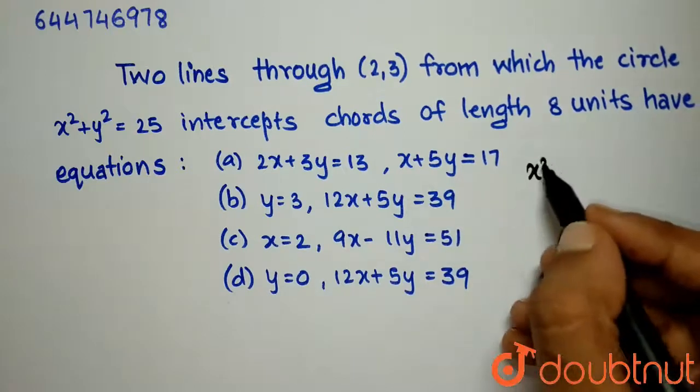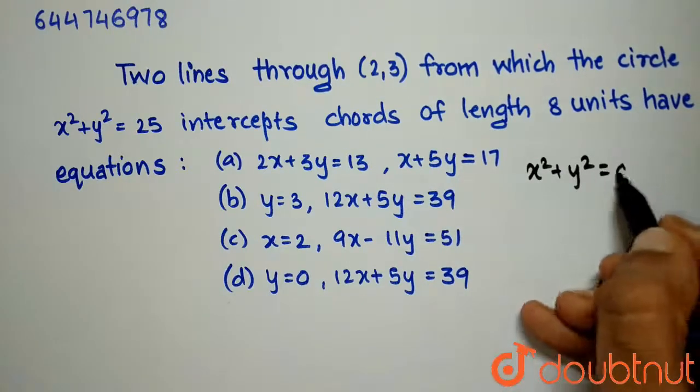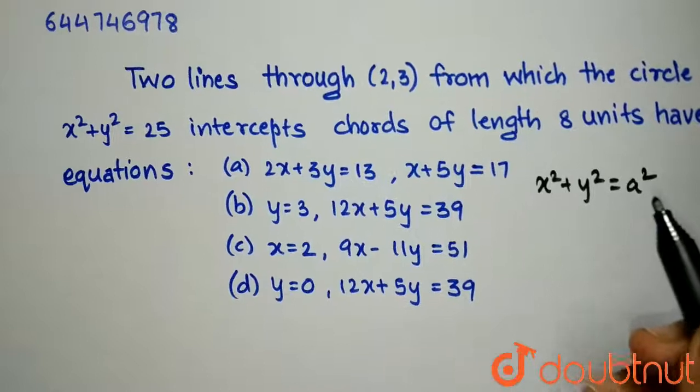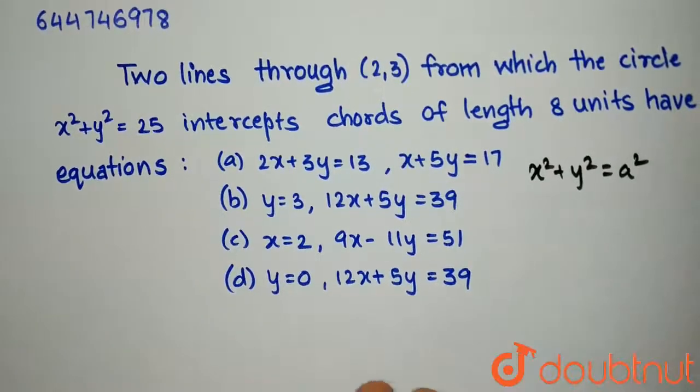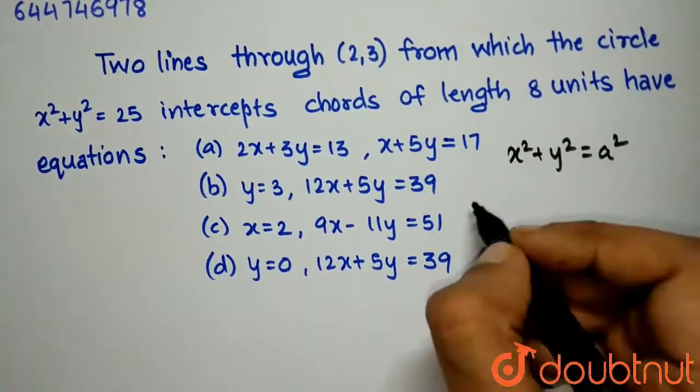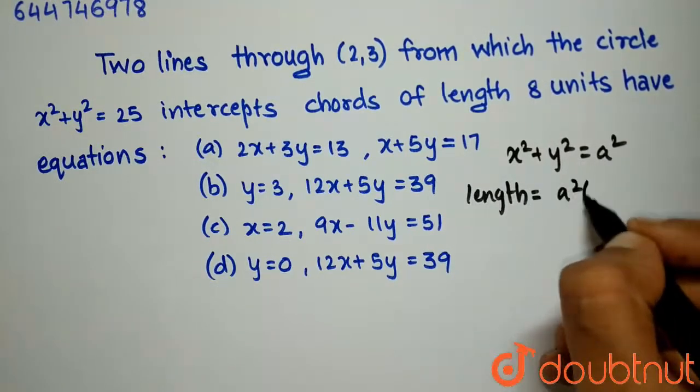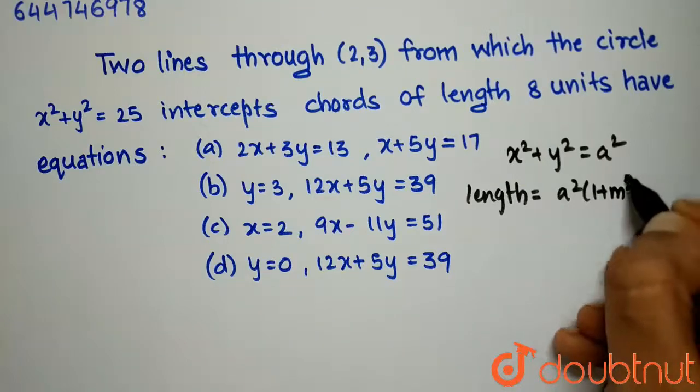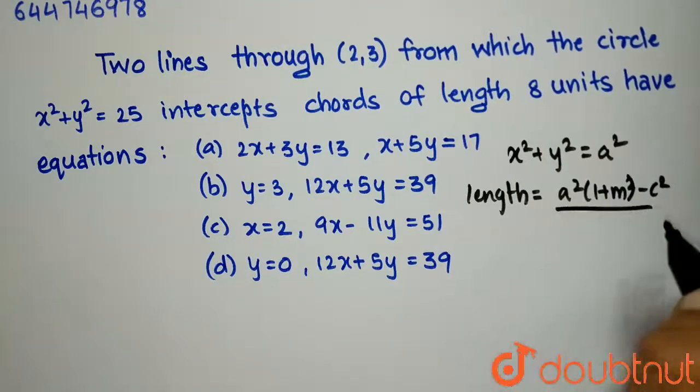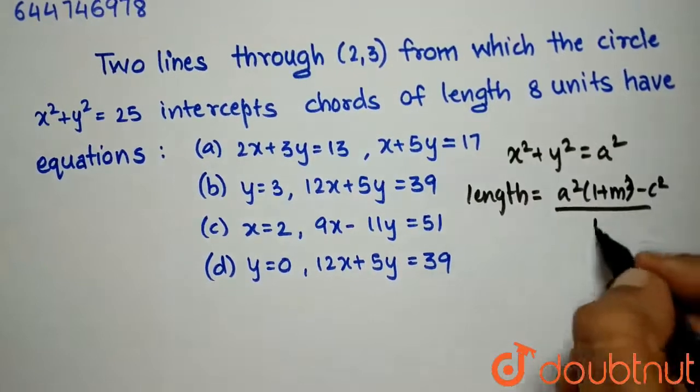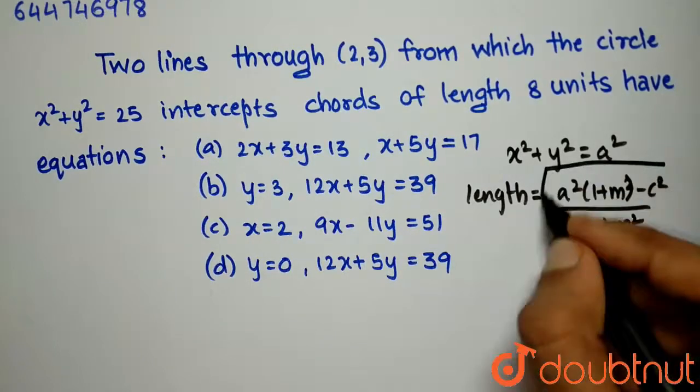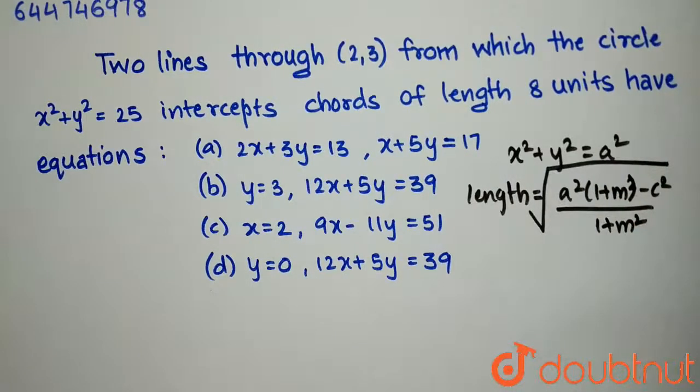Length of chord intercepted by any general circle of the equation x²+y²=a² on any straight line is given by length = √[a²(1+m²)-c²]/(1+m²).